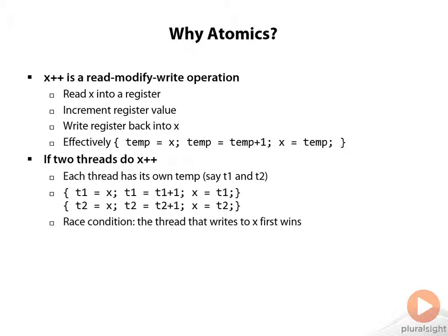Essentially, the thread that writes to x first kind of wins. Of course, the thread that writes second can then overwrite the value. So essentially, we have a bit of a problem because whoever wins, x gets incremented only once, and that's something we want to try to avoid.